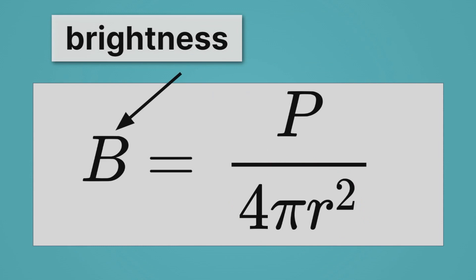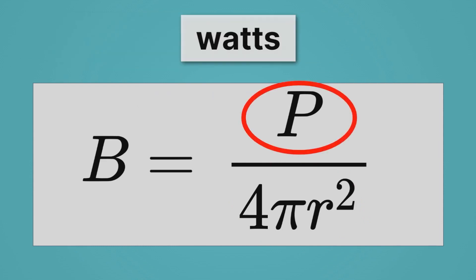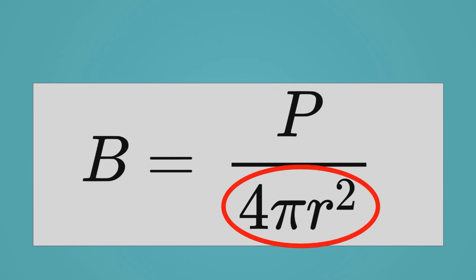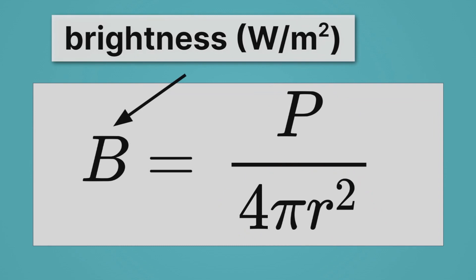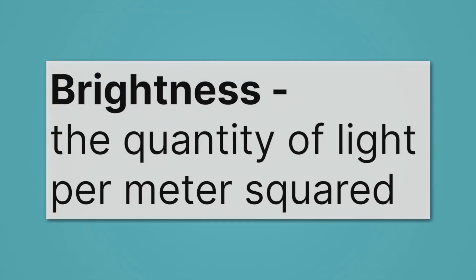Okay, let's think about the units for brightness. P, we said was in watts, and we know that our denominator, 4 pi r squared, is going to be in meters squared. That means brightness will be measured in watts per meter squared. And that's where we get this sort of funny sounding definition, the quantity of light per area. So we're just thinking about how much light is there per area.